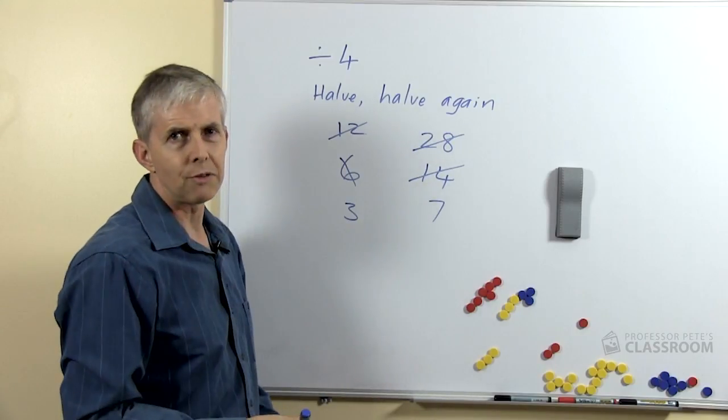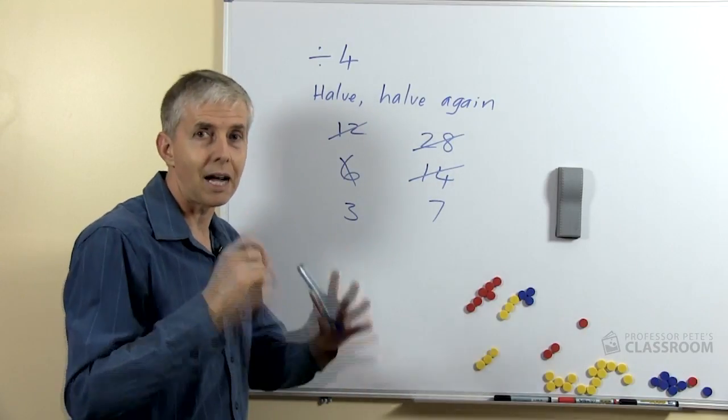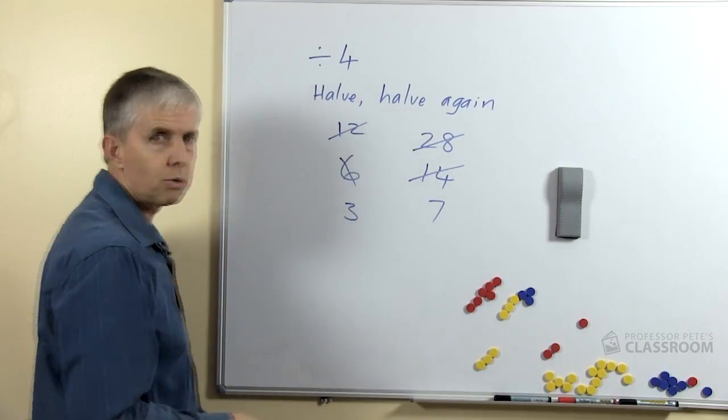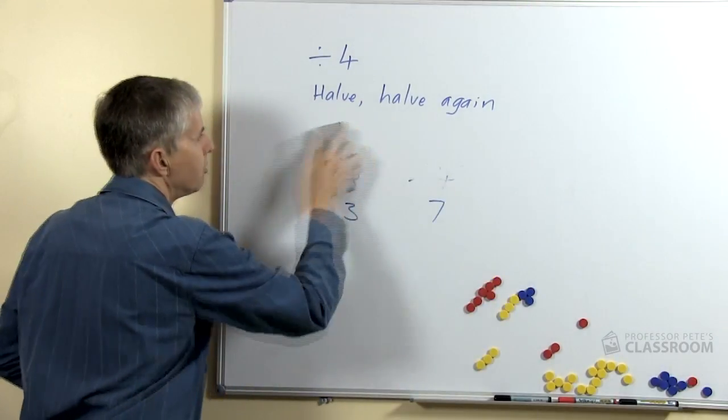Some of them are a bit more difficult. 32 and 36 are fairly hard to halve, but of course the students will get used to it over a short period of time.